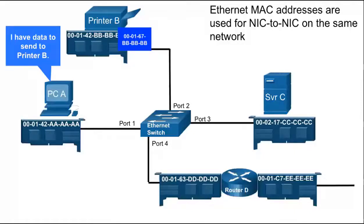Routers on an Ethernet LAN will also have an Ethernet NIC, which means they have an Ethernet MAC address. Notice Router D has two Ethernet NICs, one for each network it is connected to — that is what routers do, they connect to multiple networks. Router D's Ethernet NIC with the address that ends in all D's is only used to communicate with other devices on the same network: PCA, Printer B, and Server C.